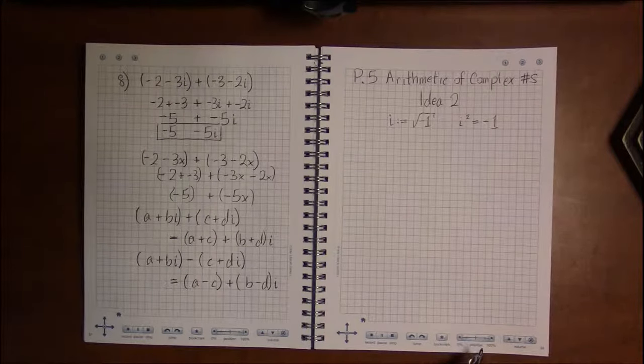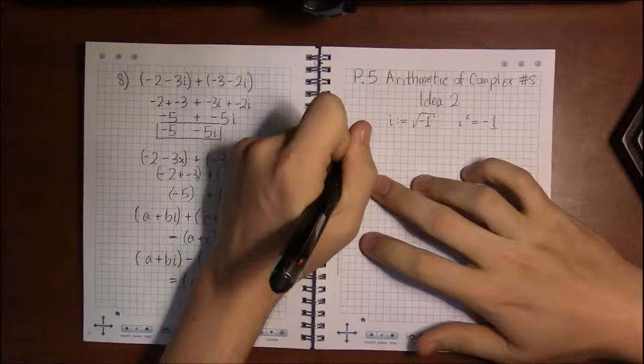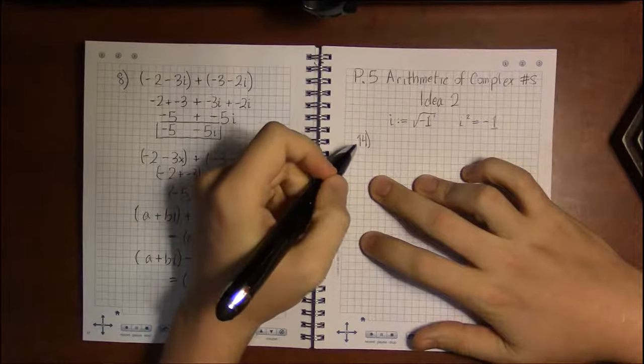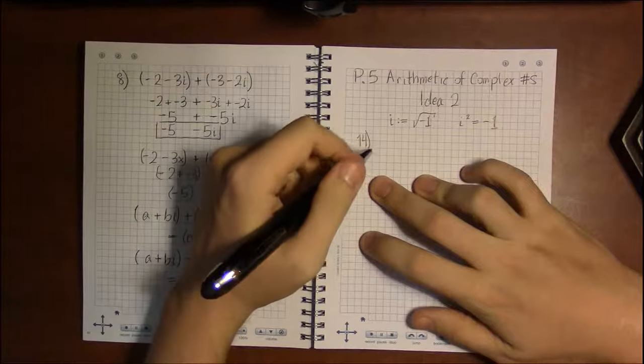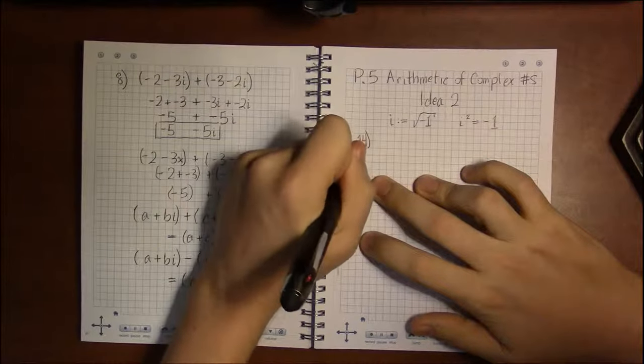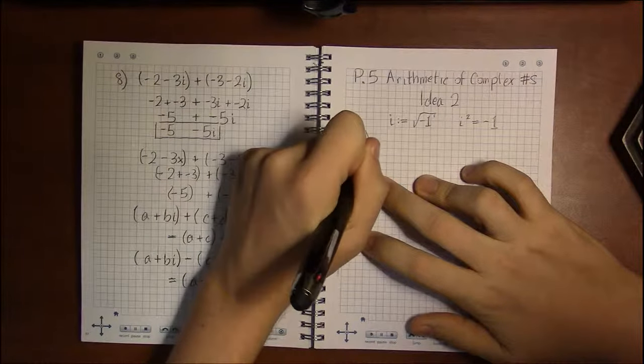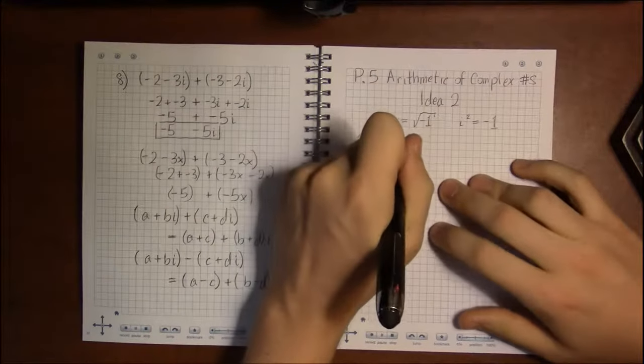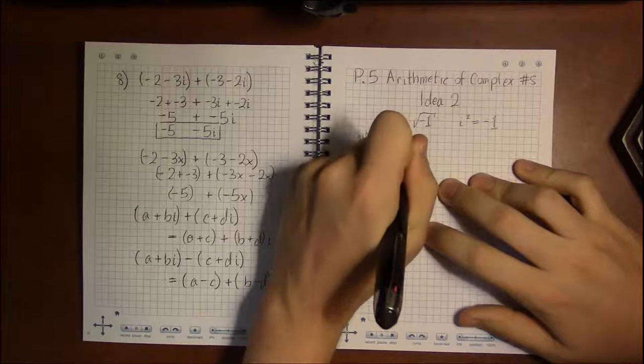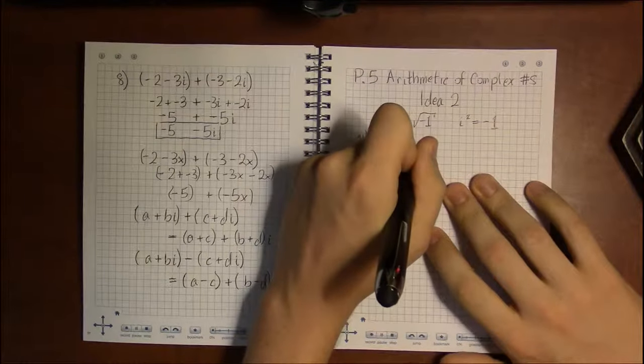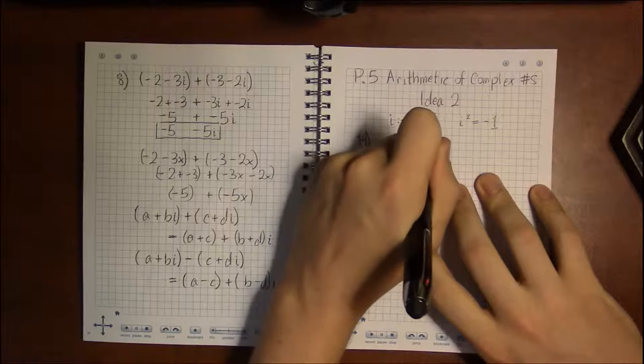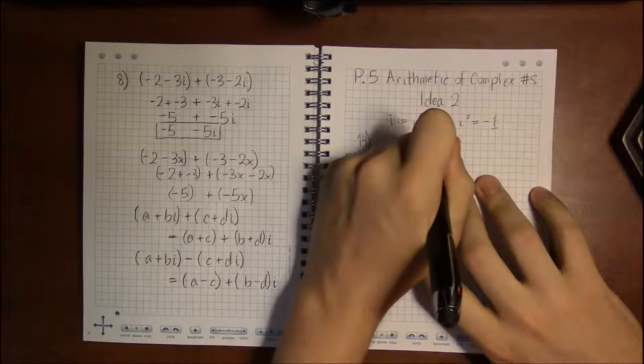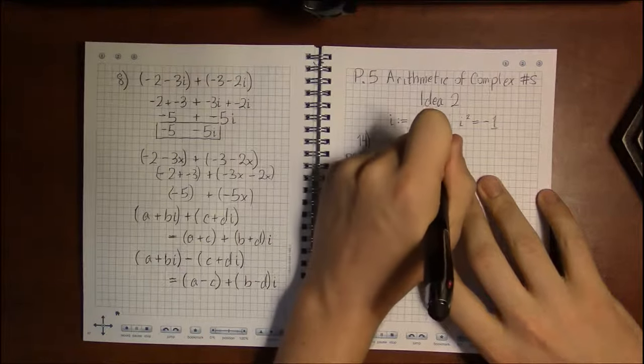Well, keeping that in mind, if we look at 14 of p5, this is on page 49, 14 asks us to perform the operation 4 plus 3i times 2 plus 5i.